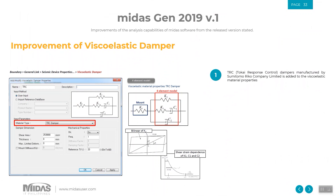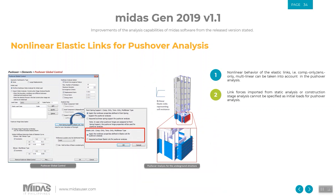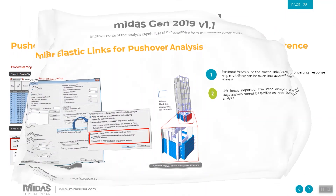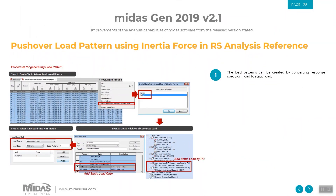Midas Gen 2019 version 1.1 now has the viscoelastic damper — the Tokai response control damper manufactured by Sumitomo Riko Company Ltd — added to the software. If you are performing advanced analysis with different advanced materials such as dampers and isolators, most of those properties can now be used when analyzing and designing structures. Performing pushover analysis with nonlinear elastic links like compression-only or tension-only can now be taken into account. The pushover load pattern using inertia force in response spectrum analysis can also be considered in the same version.